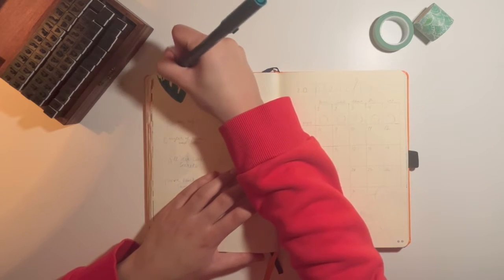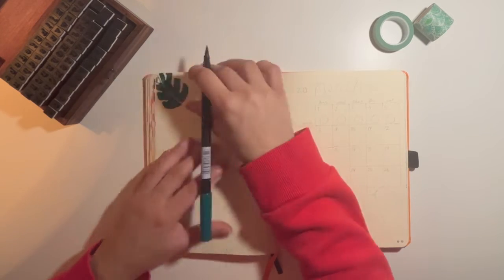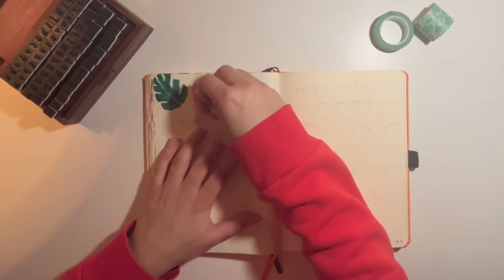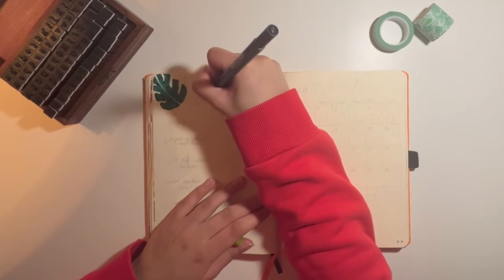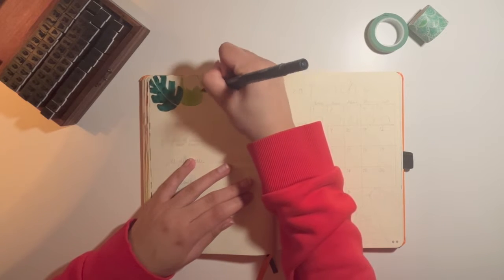And again, still going with a simplistic look, I'm just drawing a couple leaves in the corner. And then you'll see I started with just planning to write out the books I was going to read, but you'll see later on that I did end up doing something a little more advanced, for me.